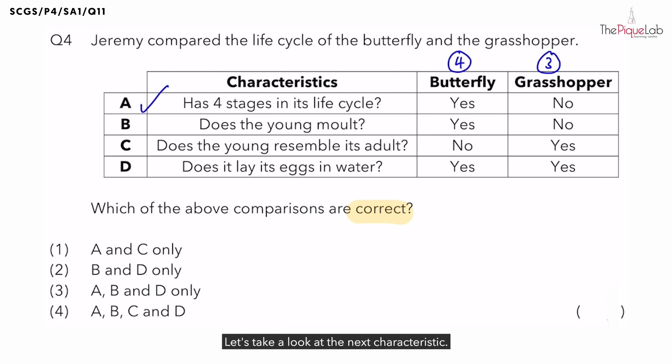Let's take a look at the next characteristic. Does the young of the butterfly and the grasshopper molt? Let's recall which group of organisms undergo molting. Insects. Why do insects undergo molting? This is so that the young of the insect can shed their hard outer covering to grow bigger. Since both the butterfly and grasshoppers are insects, should they undergo molting? Yes.